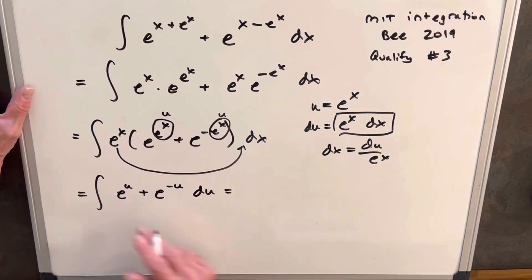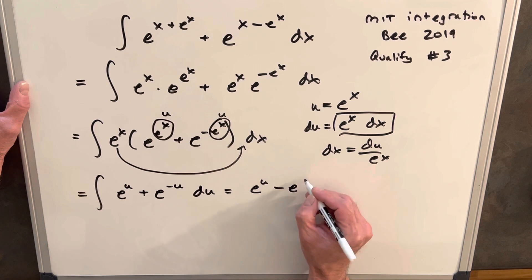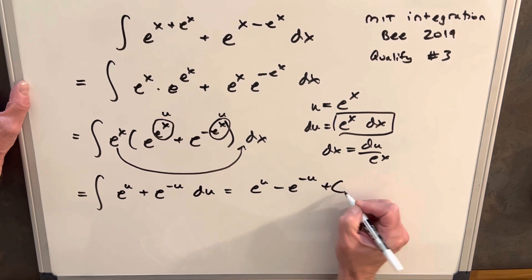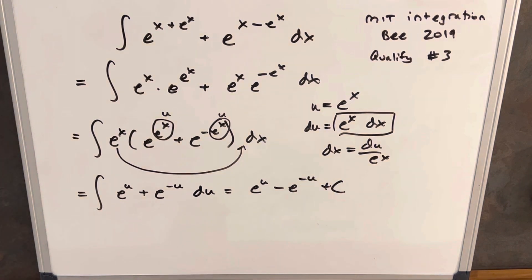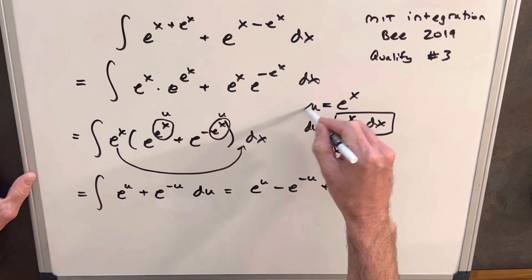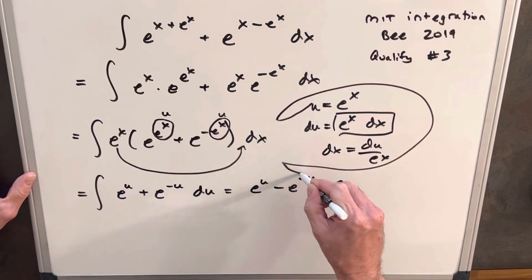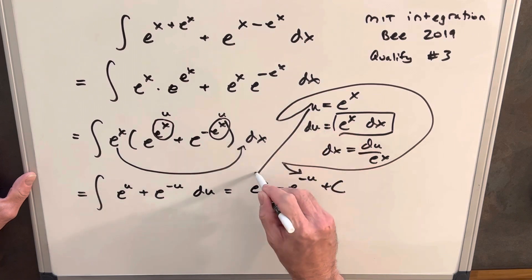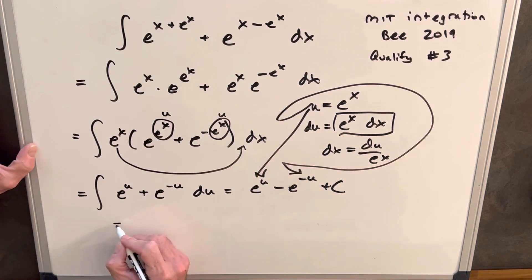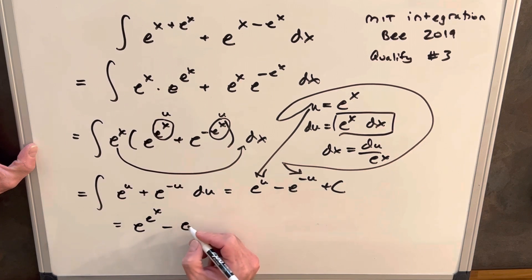And so then all we'll have to do is we just need to do our back substitution, put one there and put one there. And so we're gonna be left with e to the e to the x minus e to the, careful, e to the minus e to the x plus c. And that's our solution.